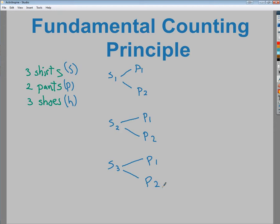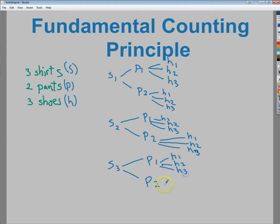From here, I have to think of my shoe options. Once I pick shirt one and pair of pants one, then I have three options for shoes. So I'm going to do H1, H2, and H3. Same thing for here, here, here, here, starting to look like a lot at this point. And then finally, the last set.